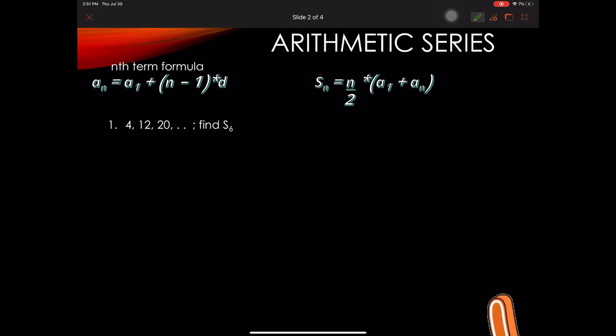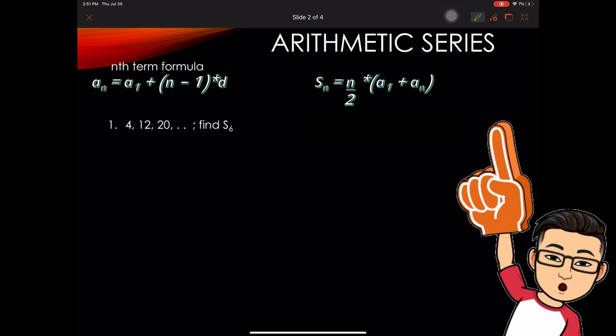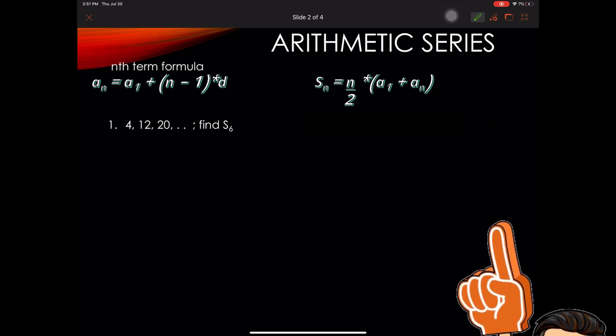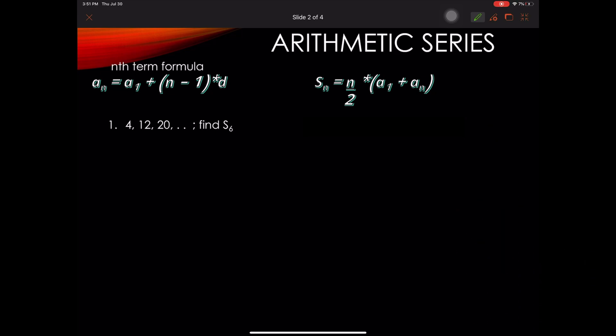Okay, so example number 1. The sequence 4, 12, 20, and you are asked to find the S sub 6. The S sub 6 is the sum of the first 6 terms of this arithmetic sequence.